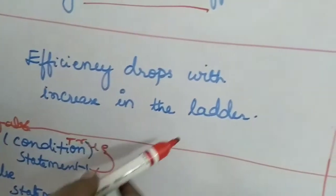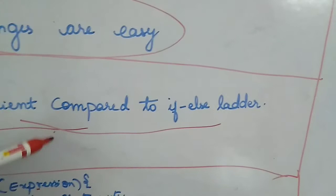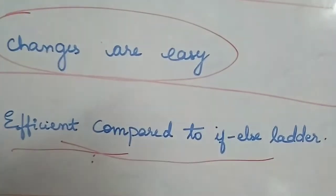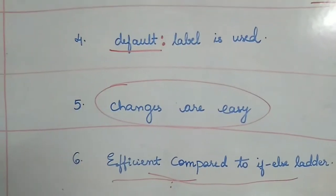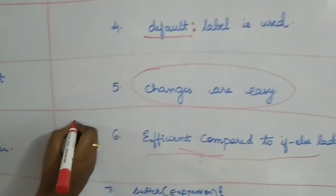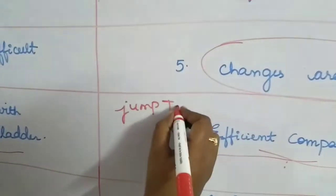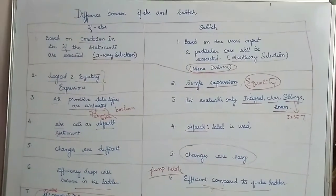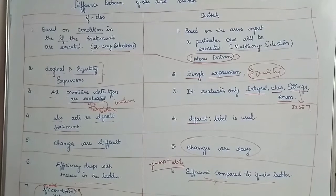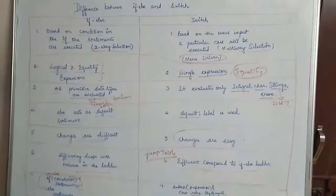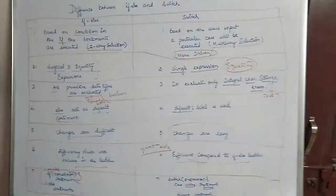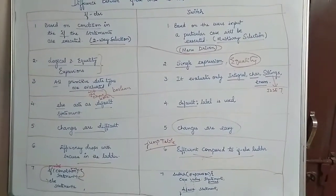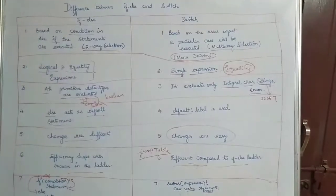The next difference is efficiency. The speed of execution drops with an increase in the if-else ladder, whereas switch is much faster. When executing switch, the compiler creates a jump table, which depends on the JVM implementation. Since there is only one equality check in switch, comparisons using the jump table happen at a much faster rate compared to if-else. In if-else, the condition expression can include many operations, making evaluation slower.